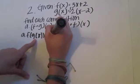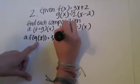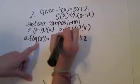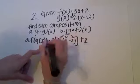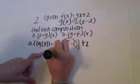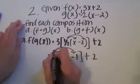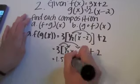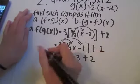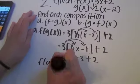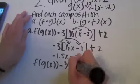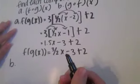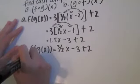We substitute g of x into f of x, so it's three times one half x minus two plus two. We distribute the three: it's three halves x minus three plus two. So f of g of x equals three halves x minus three plus two, which simplifies to one point five x minus one.